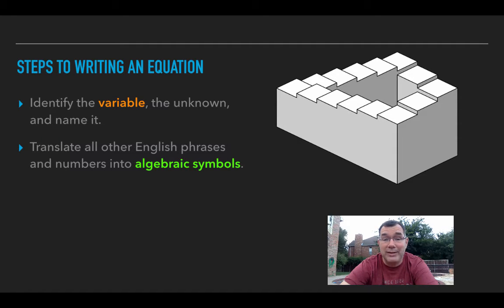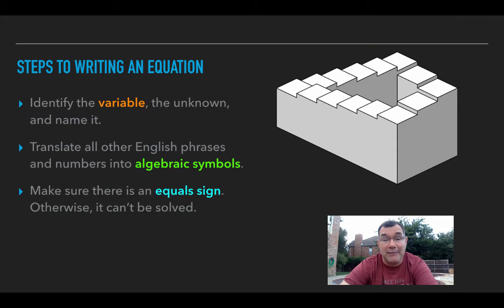We're going to translate everything else into algebraic symbols, like numbers and pluses and minuses and equal signs. It's going to have to have an equal sign, otherwise we can't solve it. It would just be an expression in that case, and you can't solve expressions. So we need an equal sign.